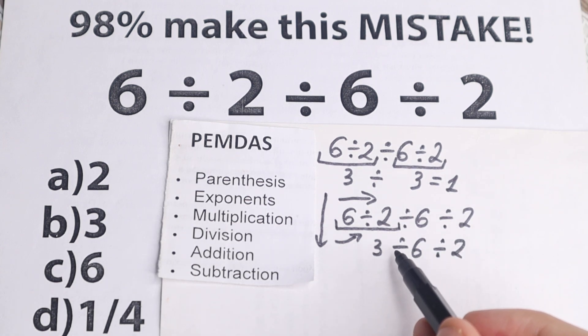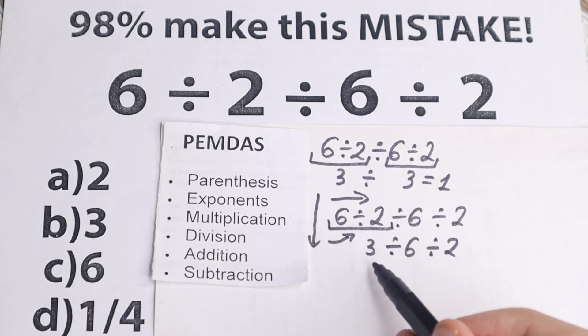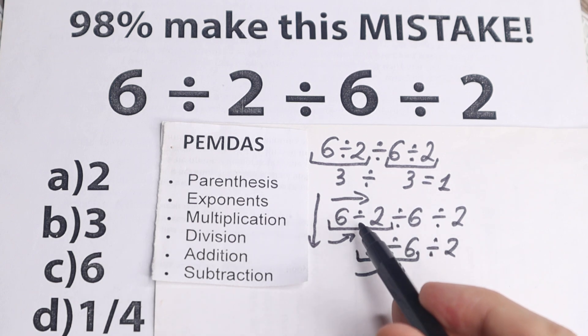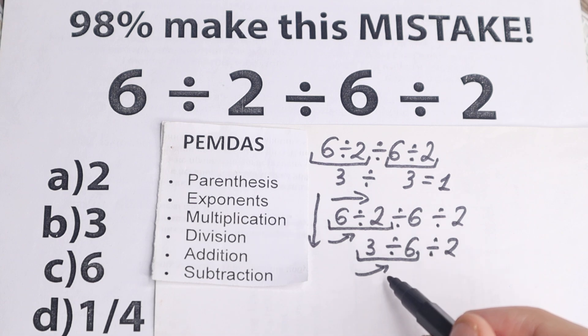Now what we have? We have this division case once more, so we need to divide first two numbers, because the first sign from left to right is this division. Once more, the same step. The first sign from left to right division. 3 divided by 6 equal to 1 half. 1 half, this is our fraction, I write it in a fraction way, or we can write it as 0.5, doesn't matter.